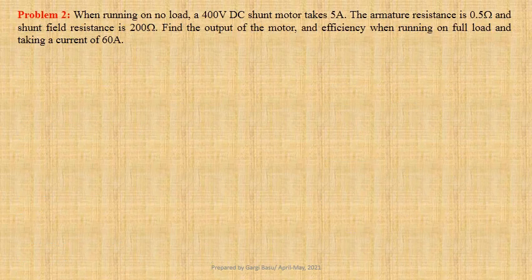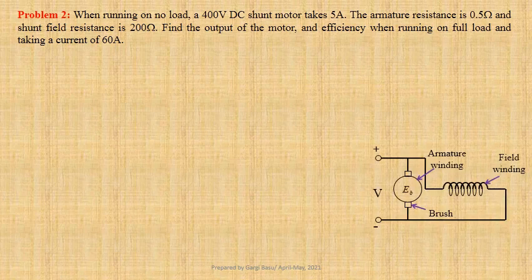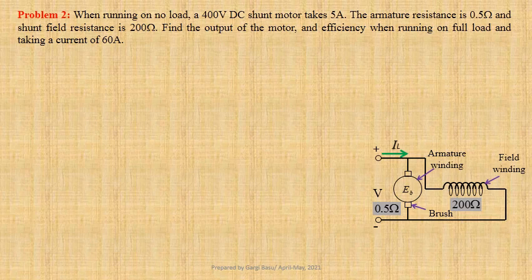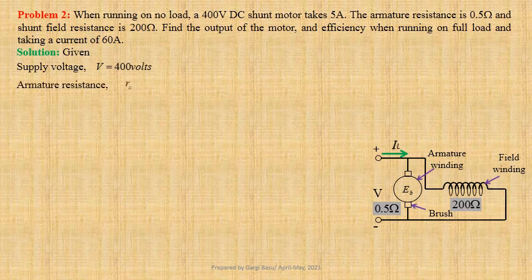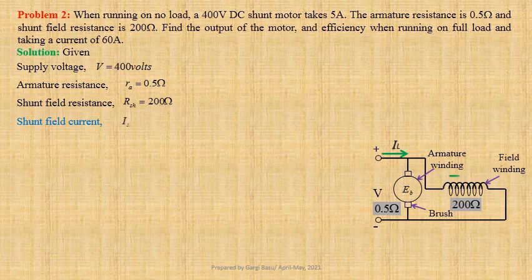Problem 2: When running on no load, a 400V DC shunt motor takes 5A. The armature resistance is 0.5Ω and shunt field resistance is 200Ω. We have to determine the output of the motor and efficiency when running on full load and taking a current of 60A. Supply voltage V equals 400V, RA equals 0.5Ω, RSH equals 200Ω. Shunt field current ISH equals 400 divided by 200, giving us 2A.